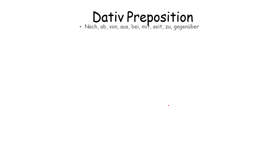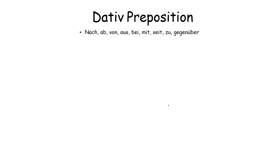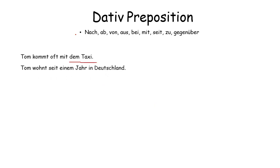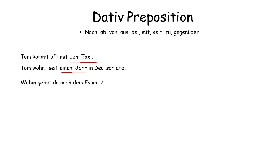Dative prepositions — there are certain prepositions where we always use dative. 'Tom kommt mit dem Taxi' — 'mit' is a dative preposition, so it changes to 'dem Taxi'. 'Tom wohnt seit einem Jahr' — 'seit' is a dative preposition, so 'einem Jahr' is dative. 'Wohin gehst du nach dem Essen?' — 'nach' is a dative preposition, so it changes to 'dem Essen'. 'Du musst zum Arzt gehen' — 'zu' plus 'dem' contracts to 'zum', because 'zu' is a dative preposition.